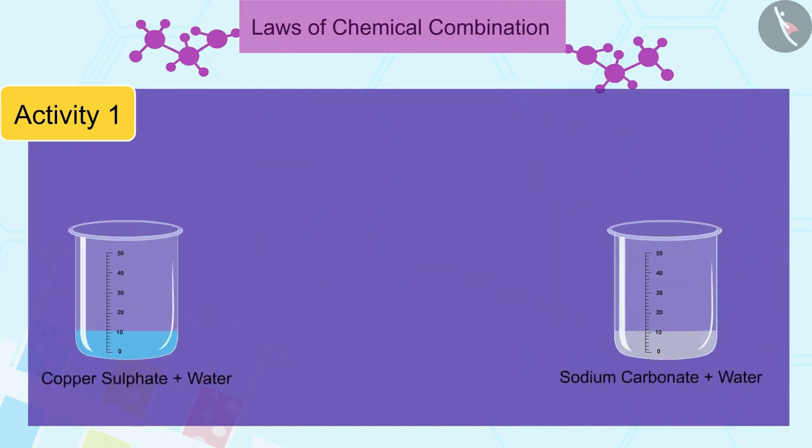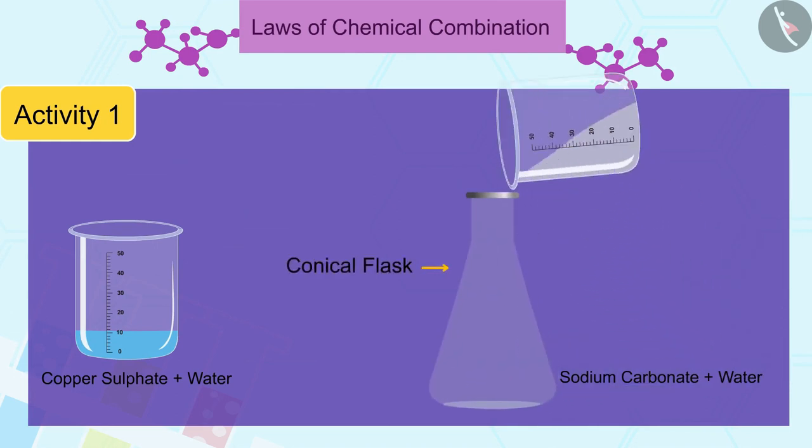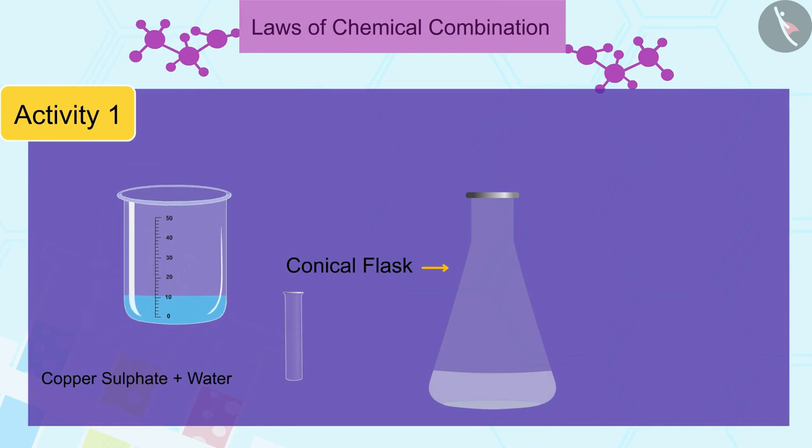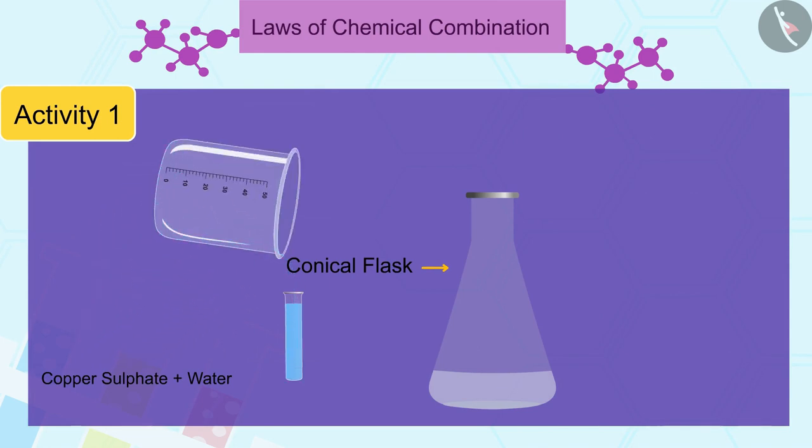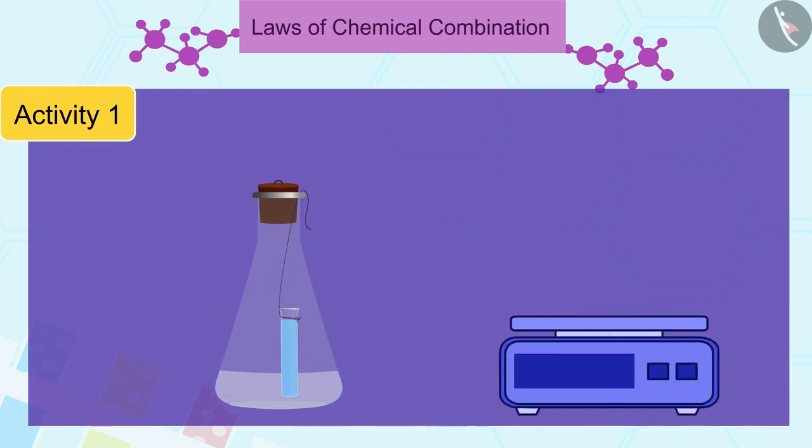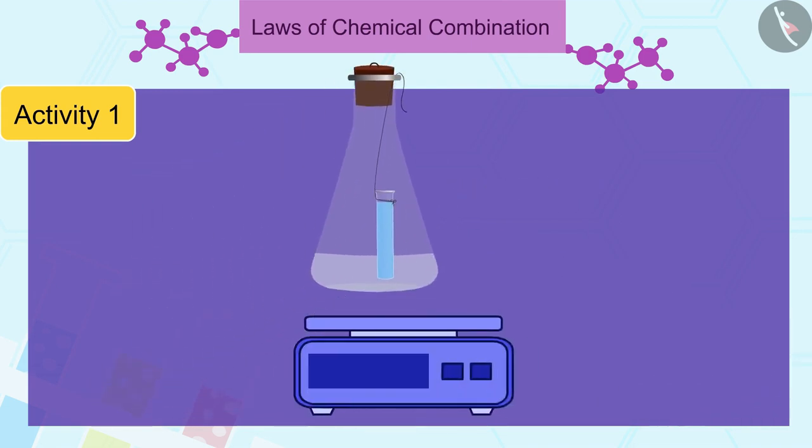Now, take the sodium carbonate solution in a conical flask and take the copper sulphate solution in a small test tube. Hang the ignition tube in the flask carefully. See that the solutions do not get mixed. Put a cork on the face of the flask. Now carefully weigh the flask containing the contents.